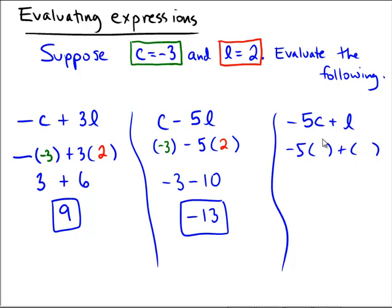c is being replaced with the number negative 3, and l is being replaced with 2. So by order of operations, looks like we have negative 5 times negative 3 for 15 plus the number 2, and therefore we should have 17.